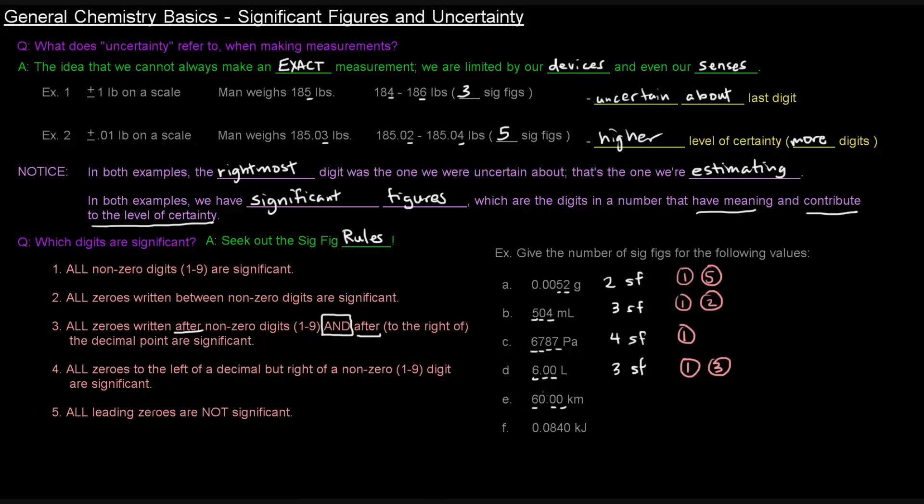So this zero here is to the left of the decimal point but to the right of the non-zero digit, so that one's significant as well. So that's four significant figures. And if you ever have a significant figure to the left and a significant figure to the right, all the digits in between those two significant figures are going to be significant. So for this one, we had rules one, three, and four.